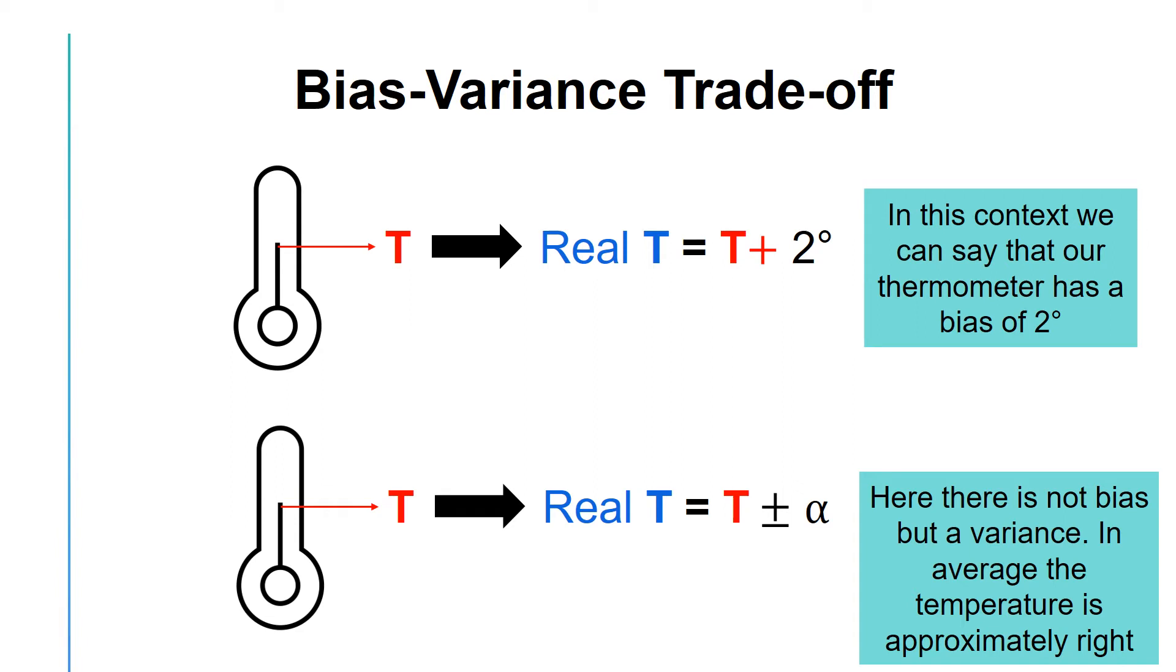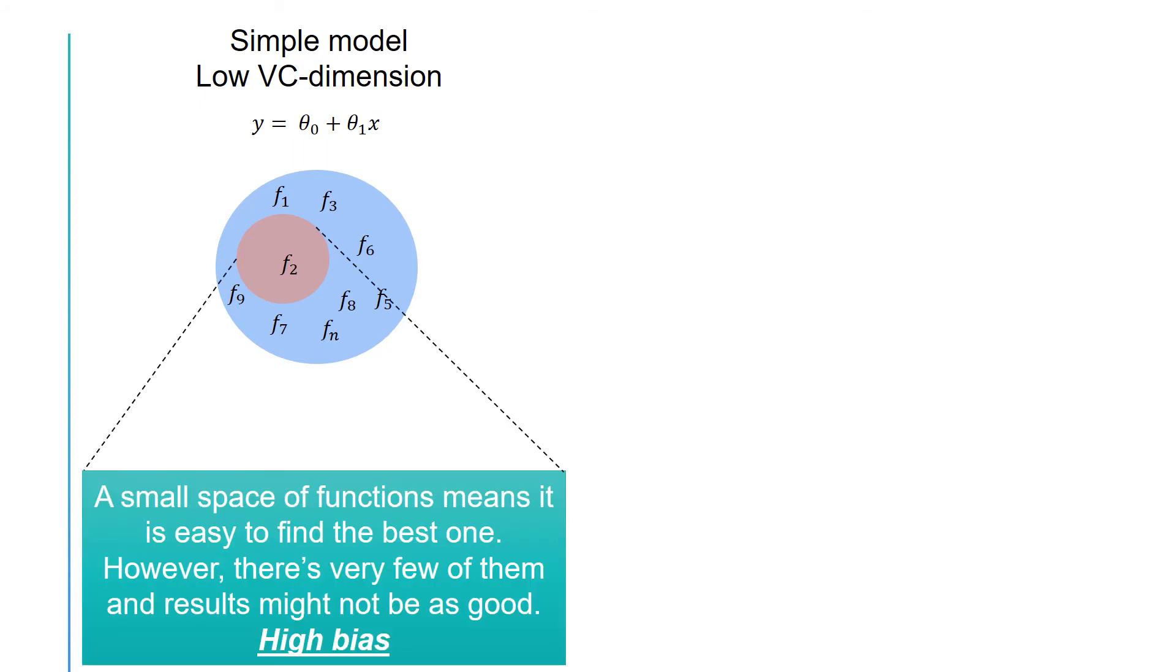Both bias and variance are undesirable and can create errors in our predictions. Let's consider the space of functions in our model. Remember, when we have a simple model or a low VC dimension, it is easy to find the function within that space that best fits our data. In other words, if we have enough training data, it is easy to zoom in and find the best function available in that space.